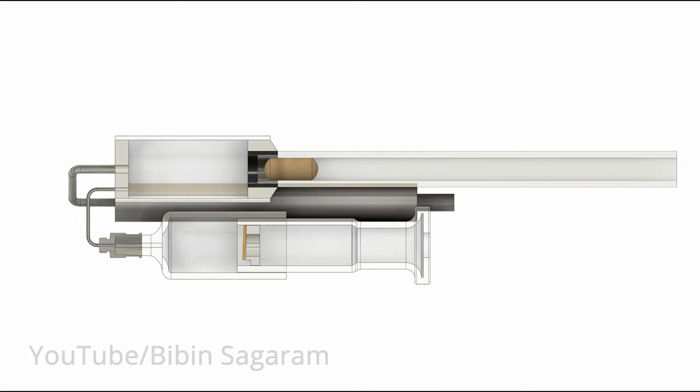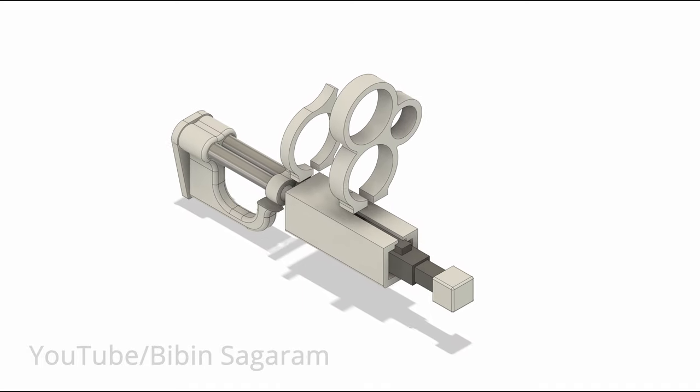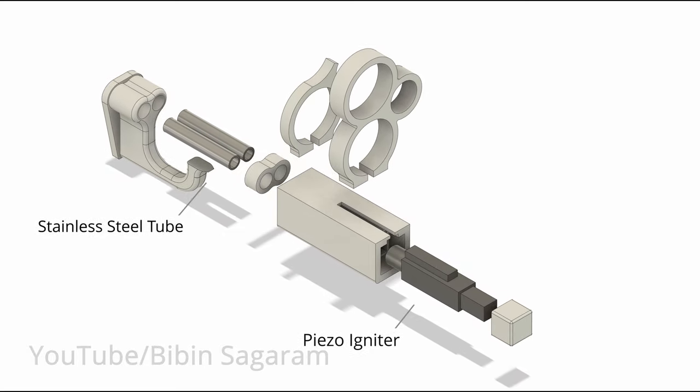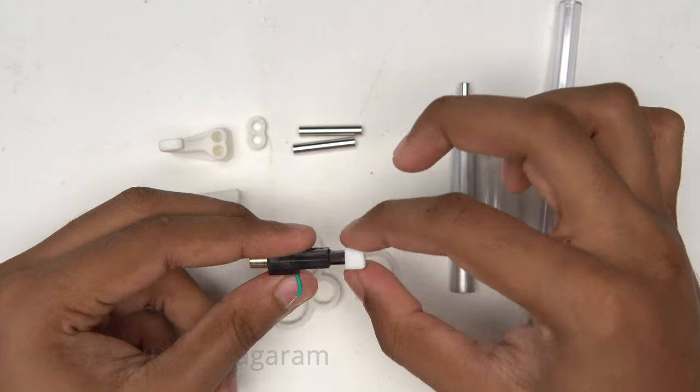Most of the air will enter through the valve since the other side is a restricted flow path. And when plunger is pushed back the valve closes and the air is pushed into the chamber. Now we need a body to hold all these components together. Body is split into different parts and printed in ABS.